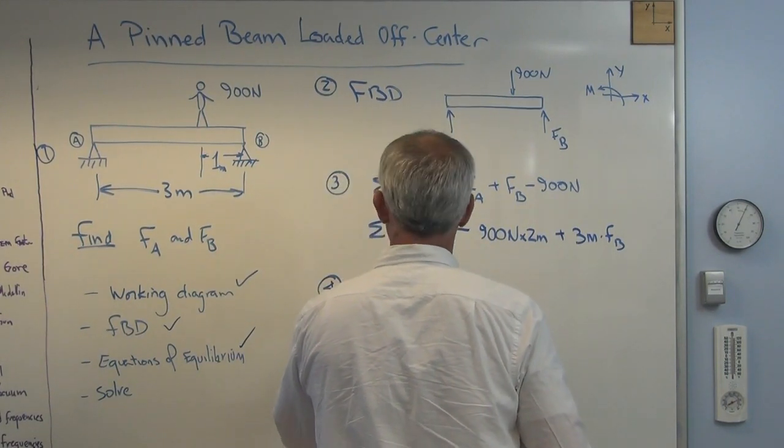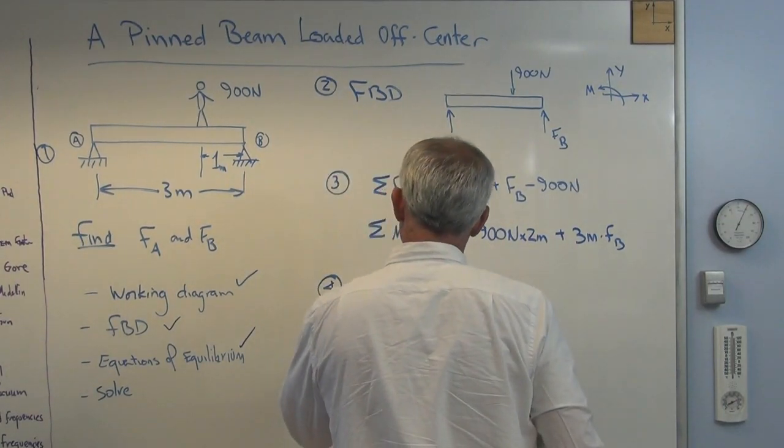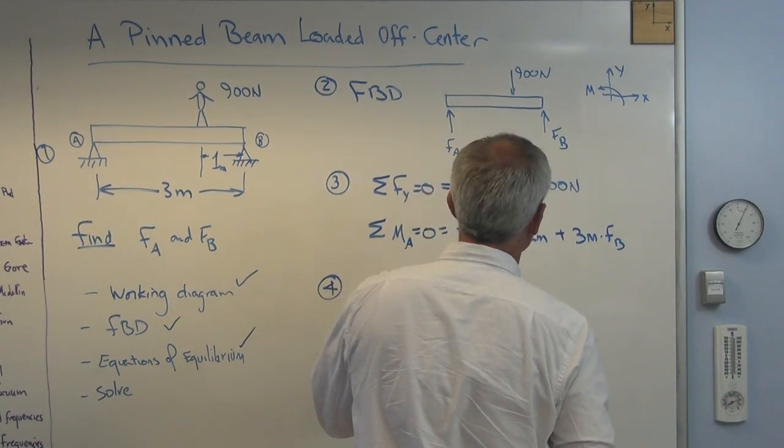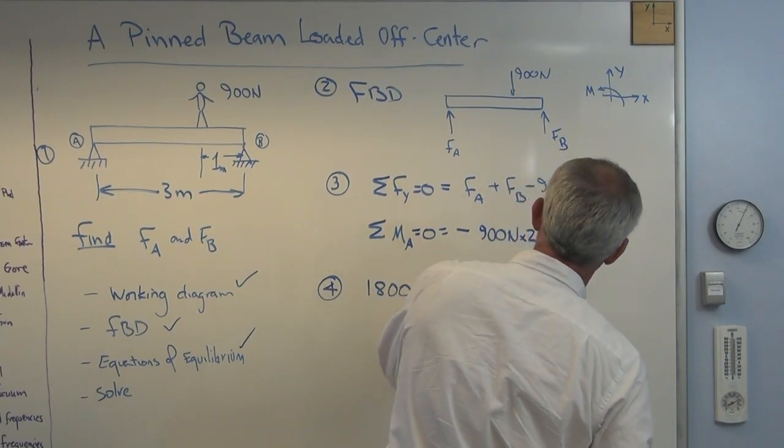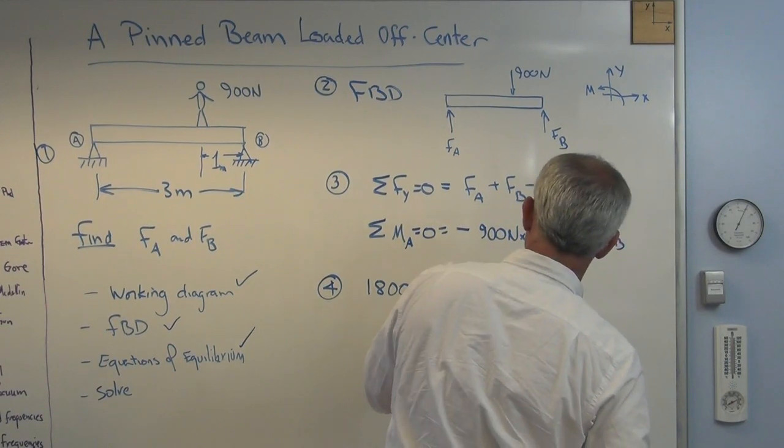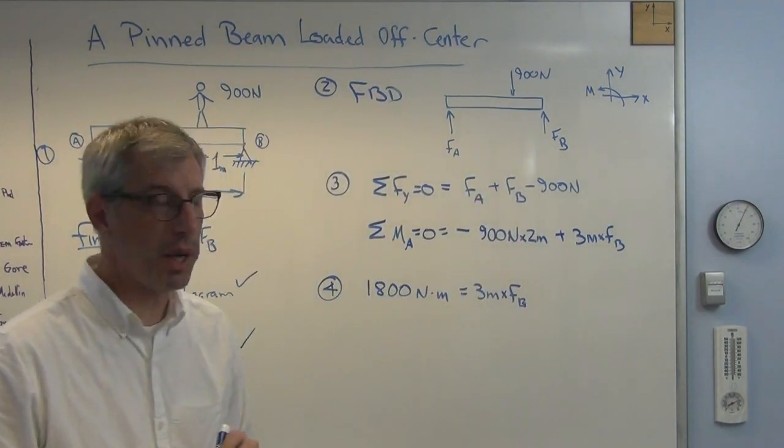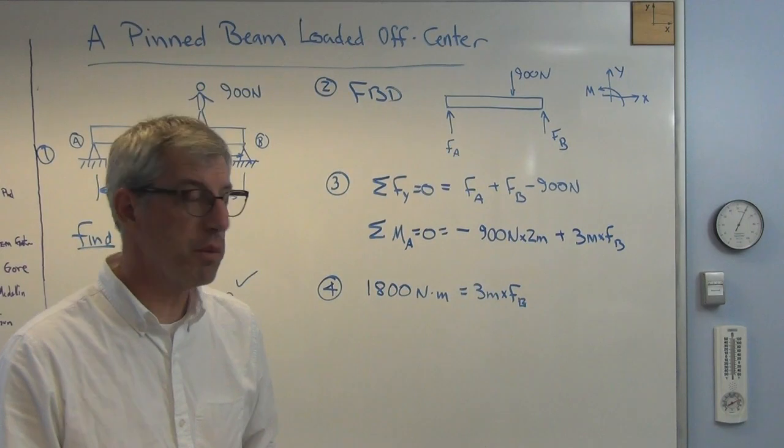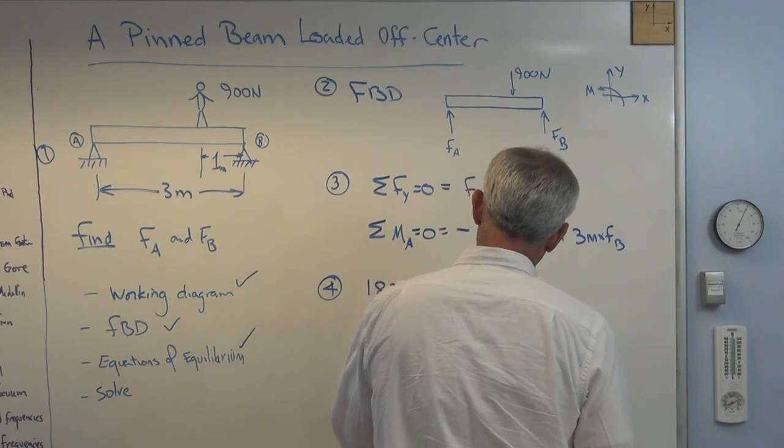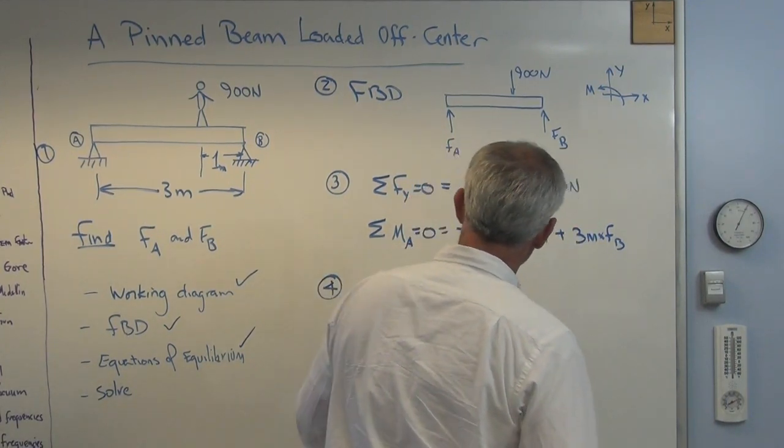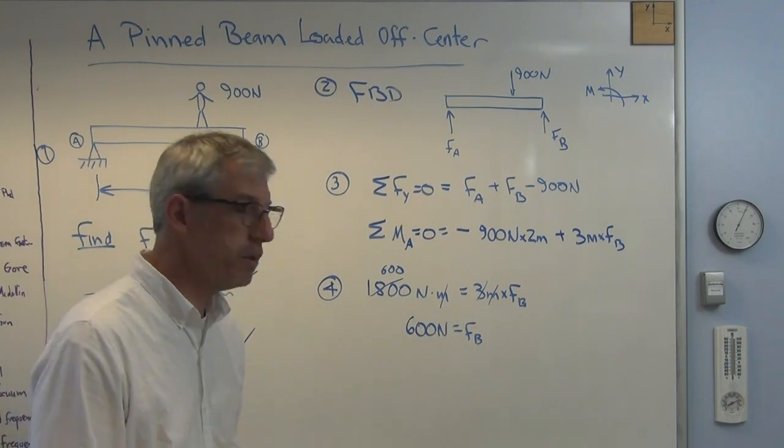Let's see. If I write that as 1800 newton meters equals three meters times FB, I got to make it an X there. I got to make it an X there. And that's FB. Looks terrible, but there you go. There's FB. Well, I divide it through by three meters and I'm going to get 600 newtons. Because remember, units cancel out just like numbers cancel out. That turns into 600. And I'm left with newtons.